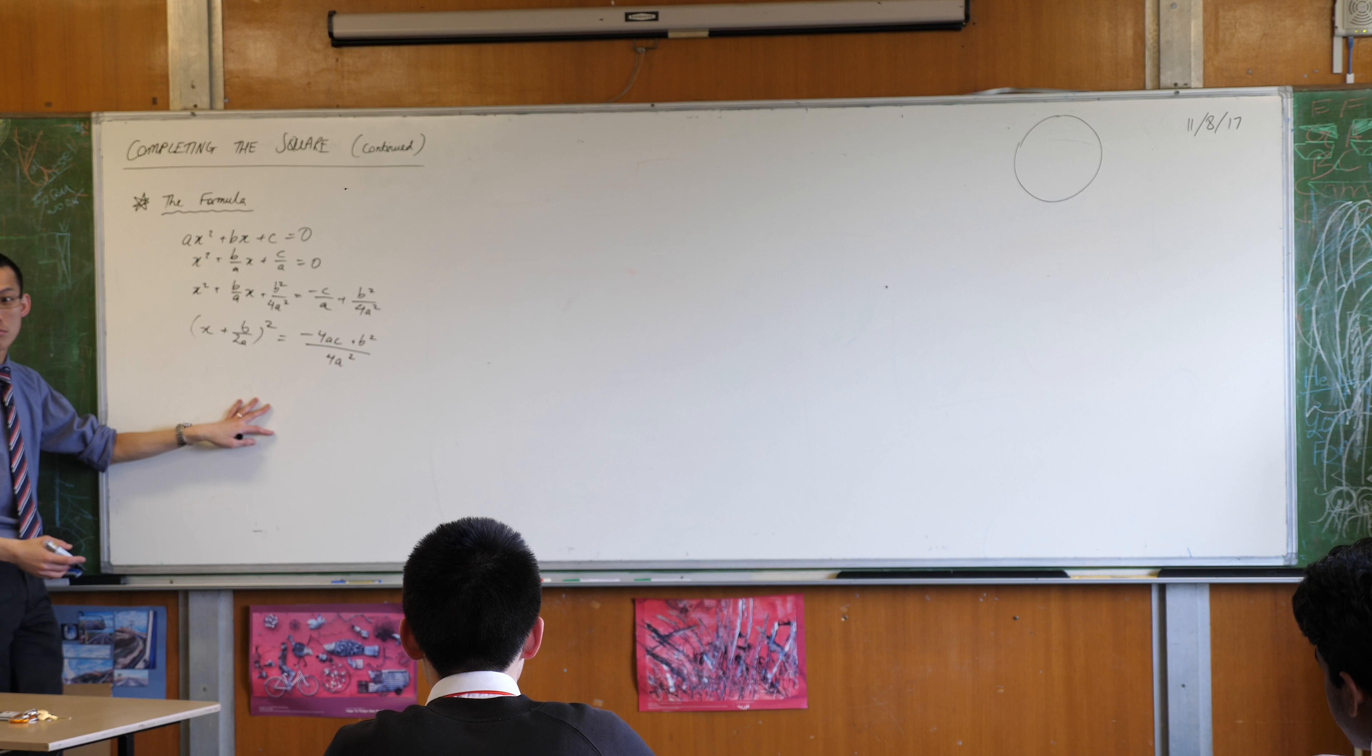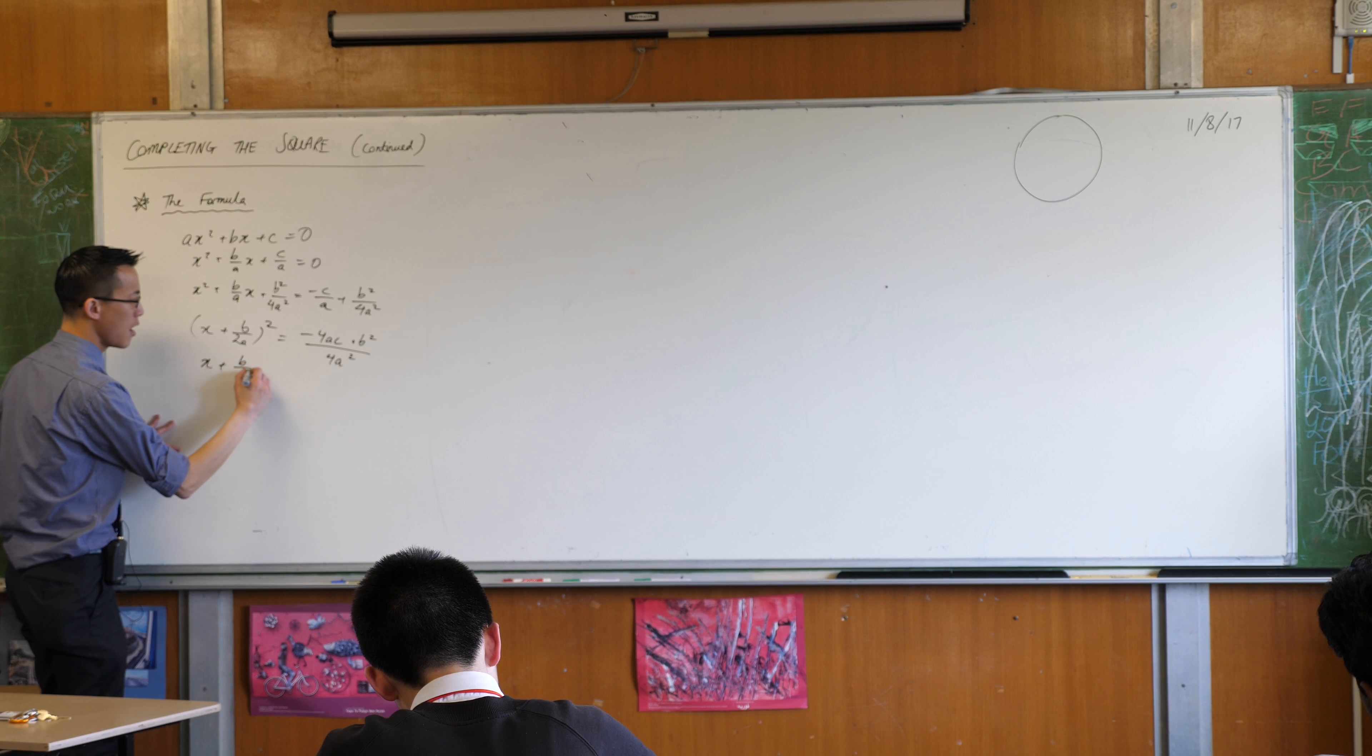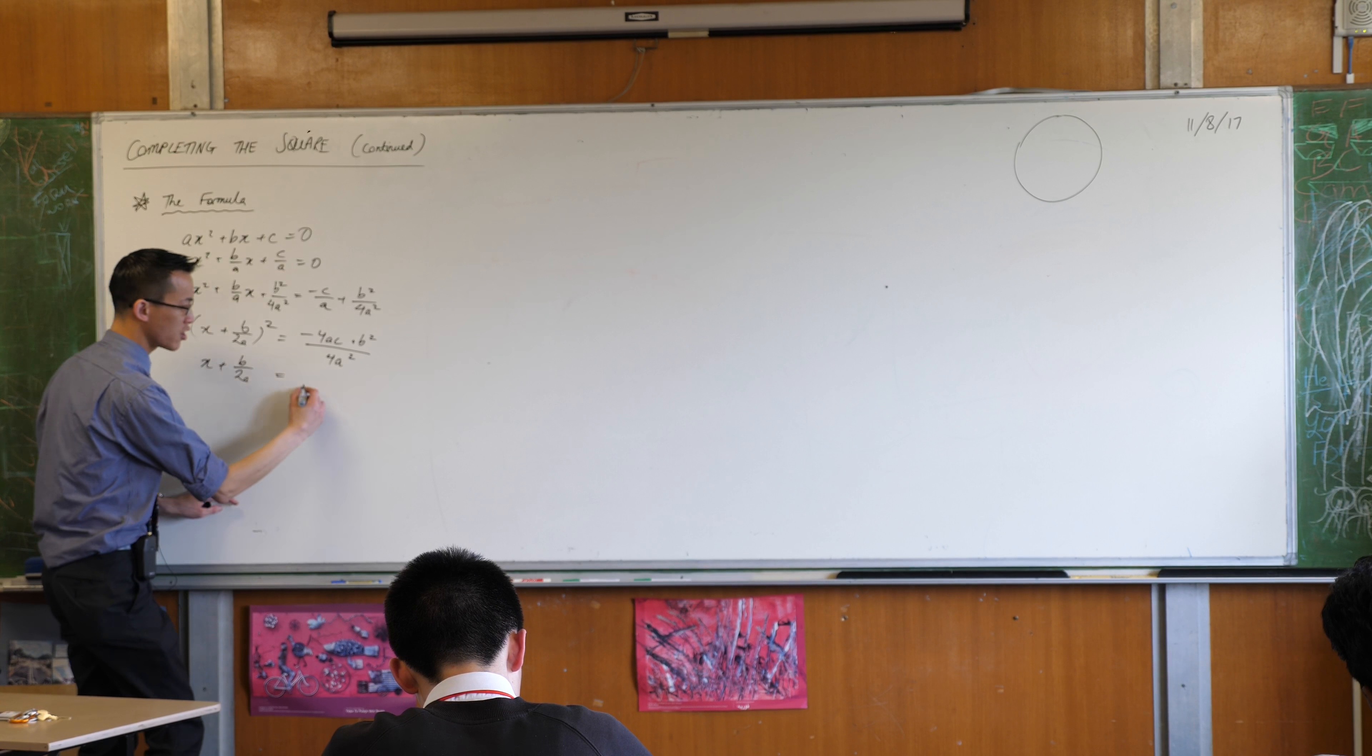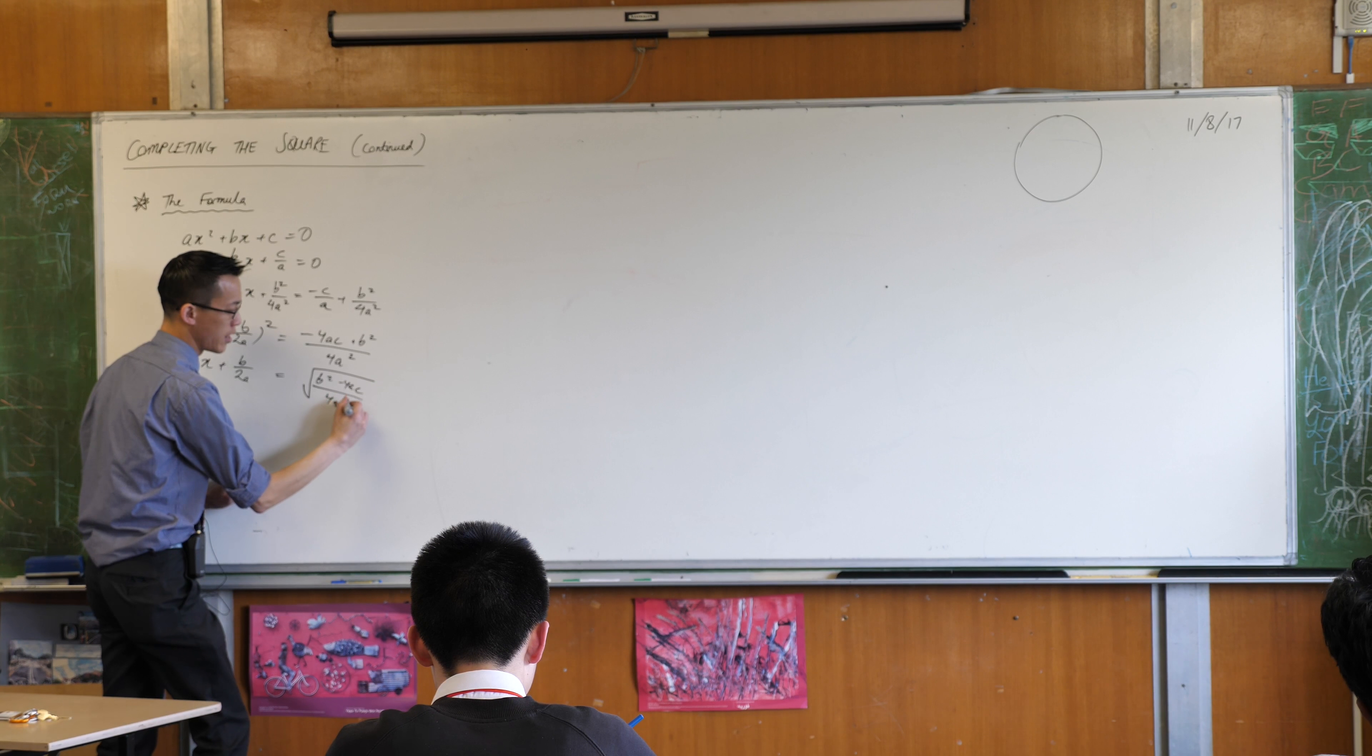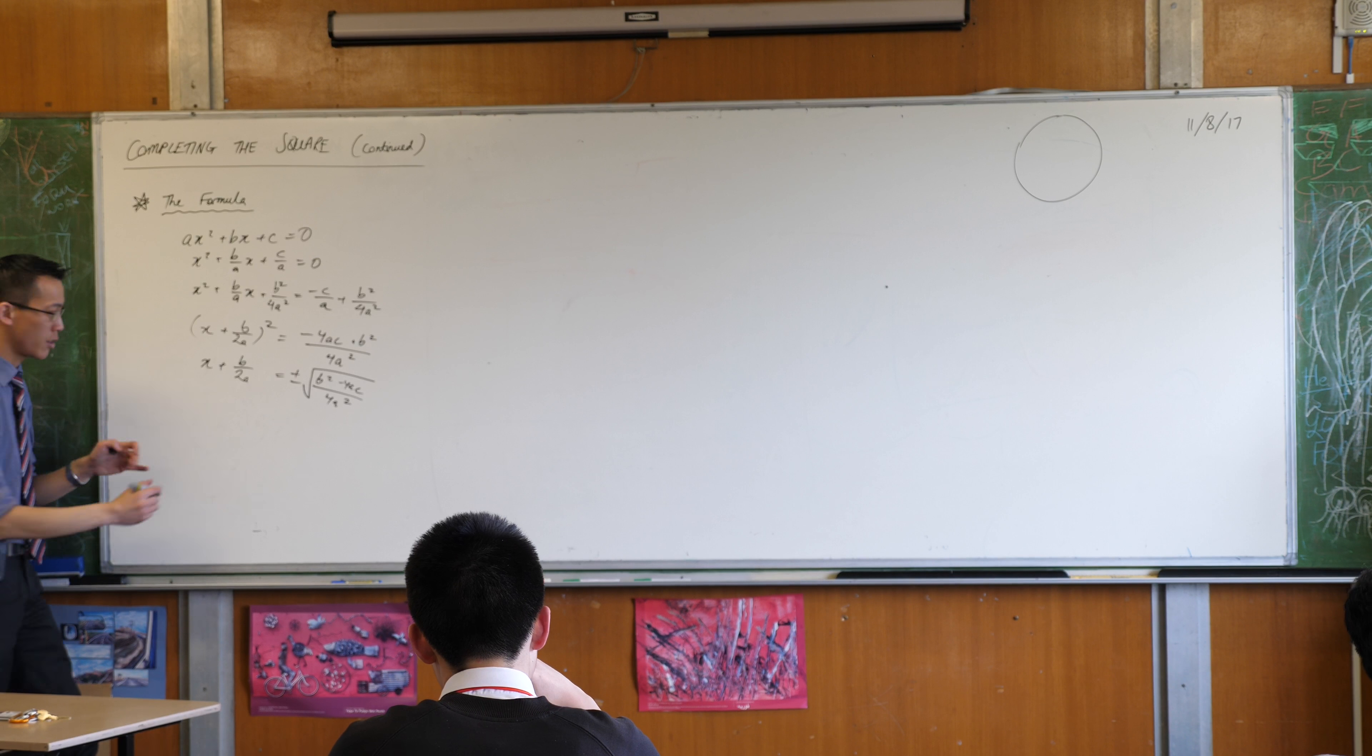Now what am I going to do? I don't want this squared thing. I want the X on its own. So, I will take the square root of both sides. I know when I do that, that that introduces a pair of solutions. It's not just the square root of this thing, B squared minus 4AC on 4A squared. It's not just that square root, it's also the negative version of that. Looking good? We're almost there.